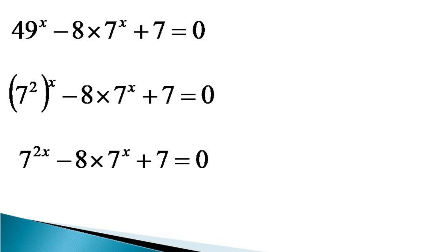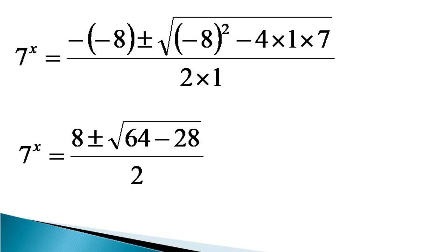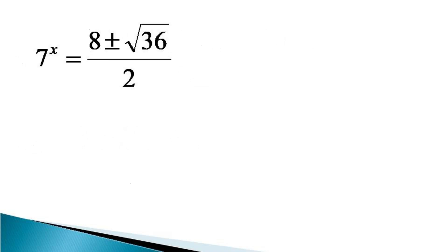It can be observed that the equation is a quadratic equation in 7 raised to the power x. The solution from the quadratic formula can be represented as 7 raised to the power x is equal to minus of minus 8 plus or minus under root of minus 8 whole square minus 4 into 1 into 7, all divided by 2 into 1. This simplifies as 7 raised to the power x is equal to 8 plus or minus under root of 64 minus 28 divided by 2, which further simplifies as 7 raised to the power x is equal to 8 plus or minus root 36 divided by 2.